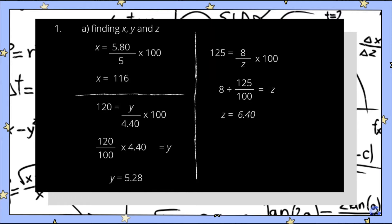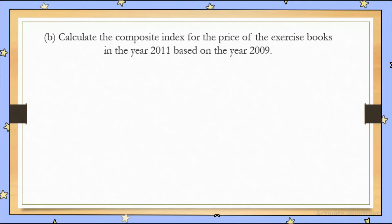For Z, the price index is already given, which is 125. When we substitute into the formula, it would be: 125 equals 8 over Z, multiplied by 100. Rearranging, we get Z equals 8 divided by 125 over 100, so Z equals 6.40.